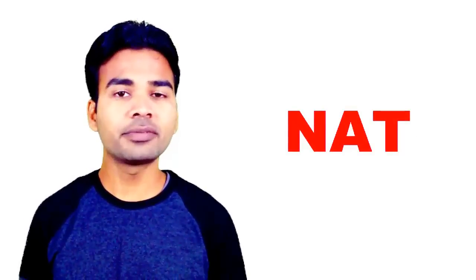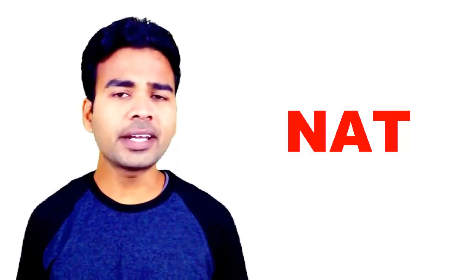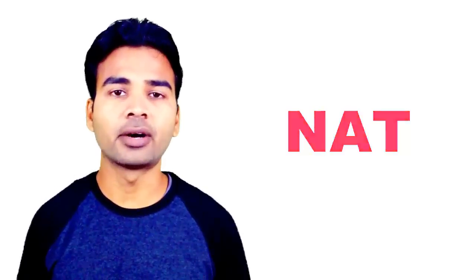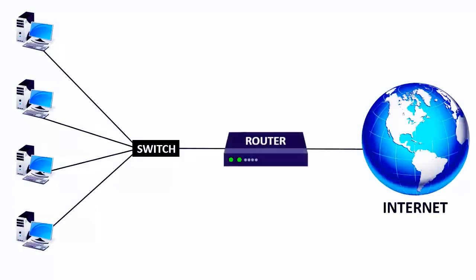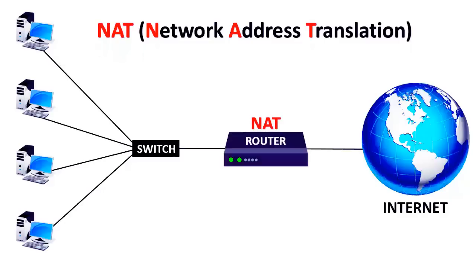NAT is used to convert a private IP address into public and a public IP address into private. So how does the entire concept of NAT — that is Network Address Translation — work? Let's find out. Let's take an example. There are 4 computers in a network but only one internet connection. The question is how it is possible for these 4 computers to access this single internet connection at the same time. It is possible with the help of NAT.